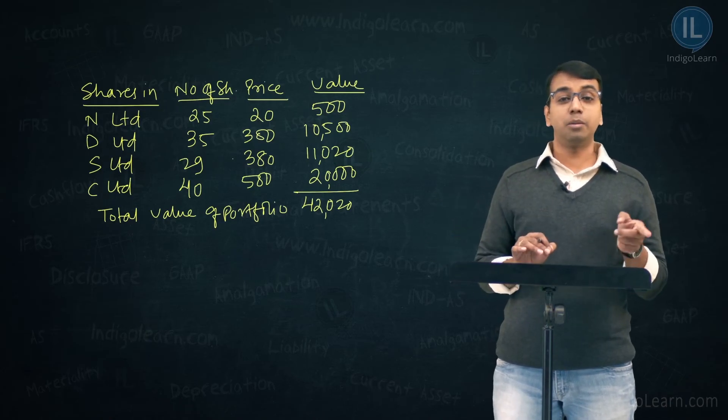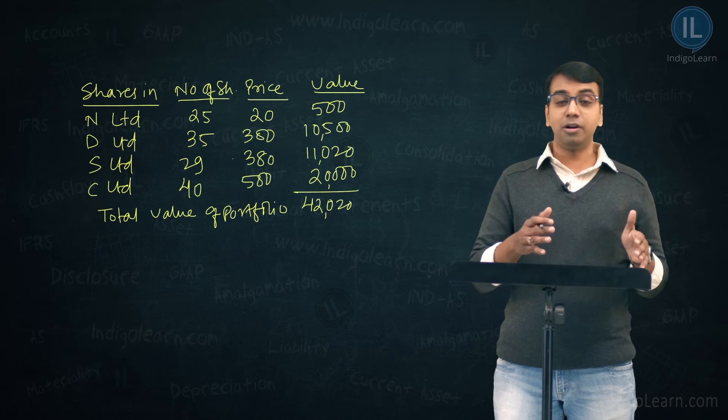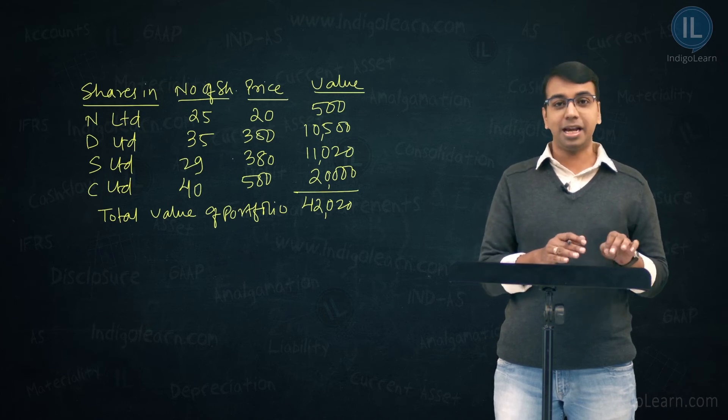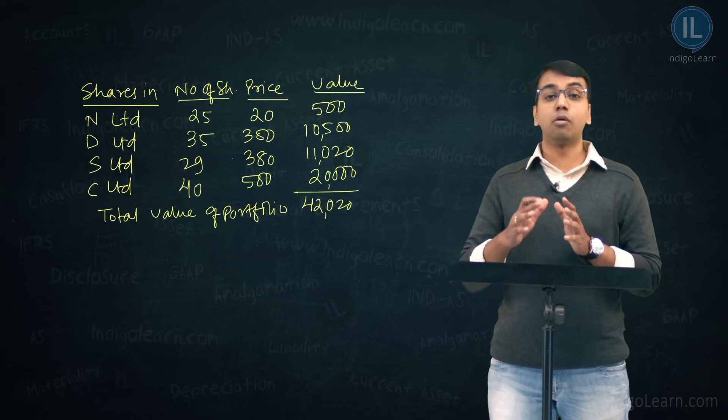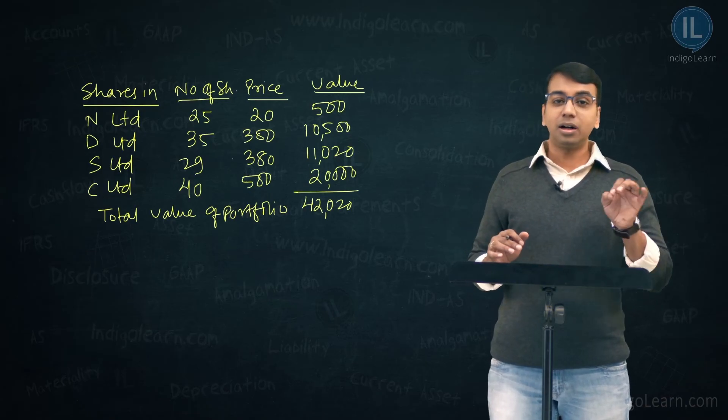Now, is there any information given about cash balance? There is no information. So we will not consider any cash balance. We will consider ₹42,020 to be the market value or the total on the asset side.